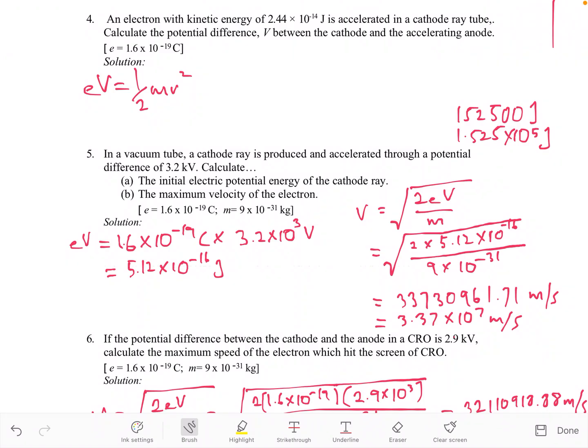Assalamu'alaikum. Let us try to solve this problem. You can read question 4. An electron with kinetic energy of 2.44 times 10 to the power of negative 14 J is accelerated in a cathode ray tube. Calculate the potential difference V between the cathode and the accelerating anode.